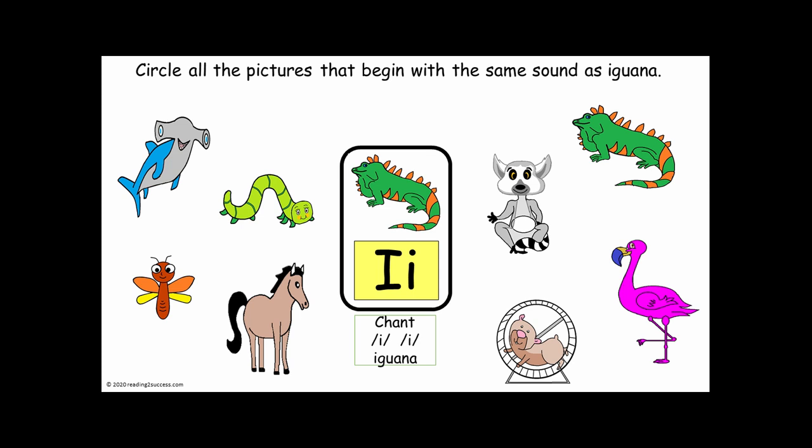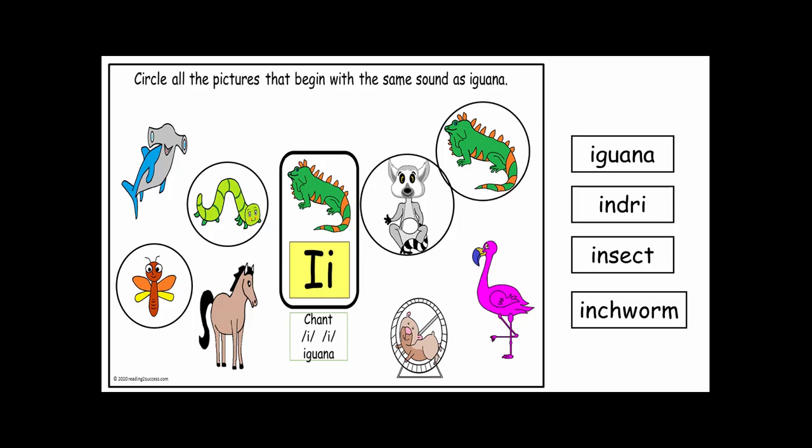Now have kids circle all the pictures that begin with the same sound as I, I, Iguana. The pictures are: I, I, Iguana. I, I, Indri. F, F, Flamingo. H, H, Hamster. H, H, Horse. I, I, Insect. I, I, Inchworm. And H, H, Hammerhead. The answers are I, I, Iguana. I, I, Indri. I, I, Insect. And I, I, Inchworm.